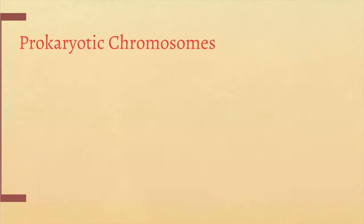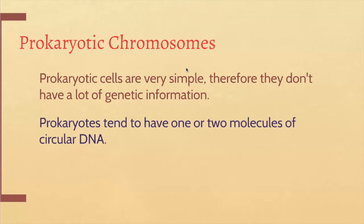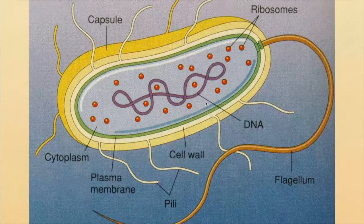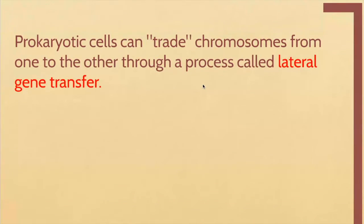Let's go over the differences between chromosomes in prokaryotic cells versus eukaryotic cells. Prokaryotes are bacteria — very small, very simple organisms, so they don't have a lot of DNA. Prokaryote cells are simple, so they usually only have one or two molecules of DNA. One interesting thing is their DNA is circular — if you look at bacteria, you can see that the ends of the DNA are connected, which isn't true for your DNA. Another interesting thing about prokaryotes is they can trade chromosomes from one to another, called lateral gene transfer, and only prokaryotes or bacteria can really do this.